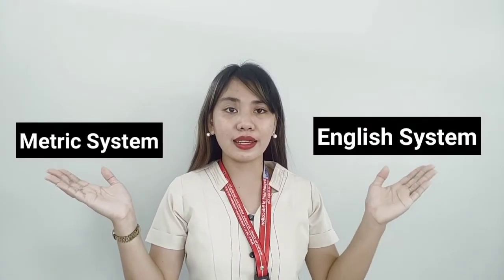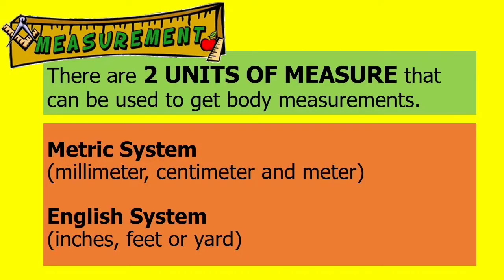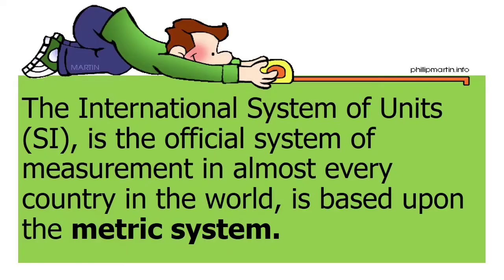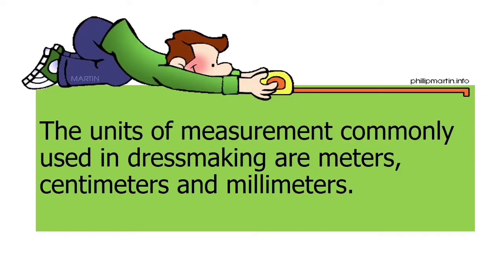There are two units of measurement that can be used in taking body measurements: the metric system and the English system. The metric system uses millimeter, centimeter, and meter. The English system uses inches, feet, or yard. The metric system is an internationally agreed decimal system of measurement created in France in 1799, and is the official system of measurement in almost every country in the world. The units of measurement commonly used in dressmaking are meters, centimeters, and millimeters.